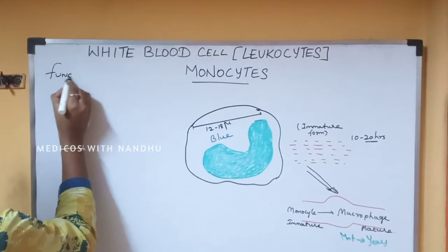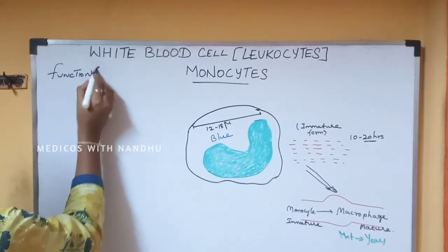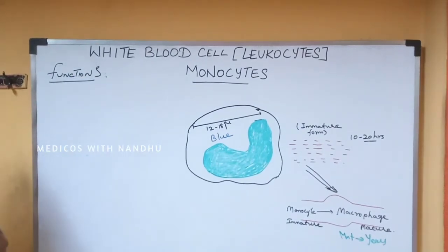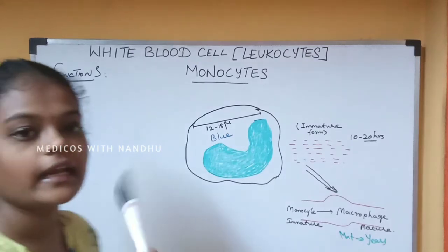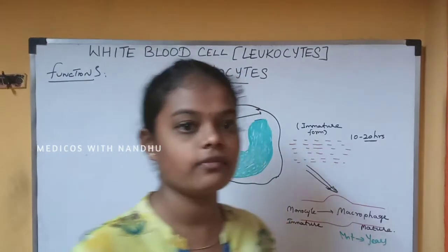Coming to the functions of the monocyte: the first function is that it acts as the second line of defense. When the first-line defenders like neutrophils have already responded, the monocyte comes in as the second line.